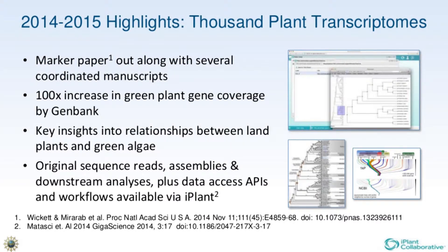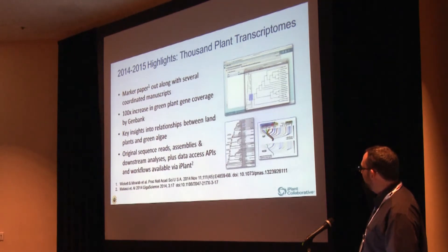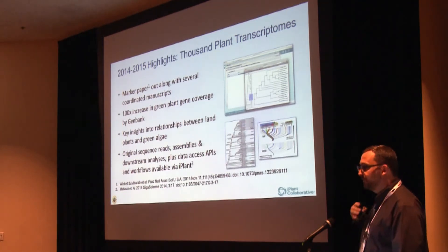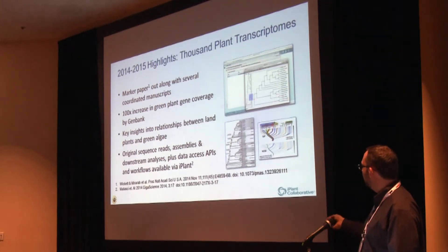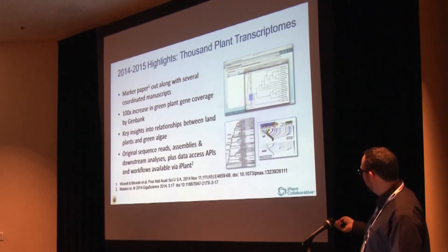Some highlights — iPlant's had a great year. We've talked about the Thousand Plant Transcriptomes Project probably every PAG since we started coming here. This is a collaborative project to sequence a thousand plant transcriptomes. This year, the marker paper came out — it provided some key insights into evolutionary relationships. The cool thing is that all of the sequence data, assemblies, downstream analyses, plus workflows for replicating these analyses yourself, and visualization tools were all made available through iPlant. You can find out about that at the URL published at GigaScience.